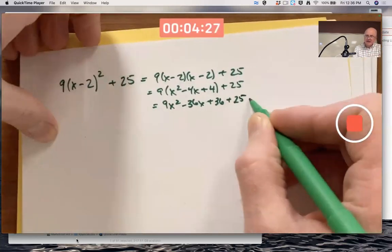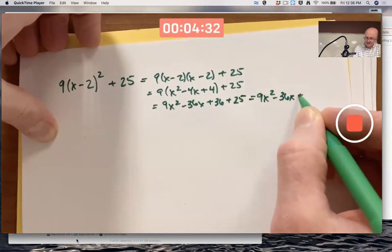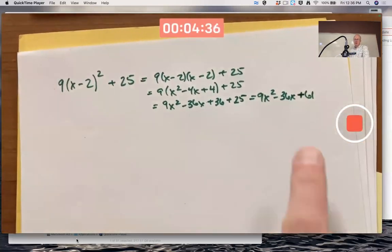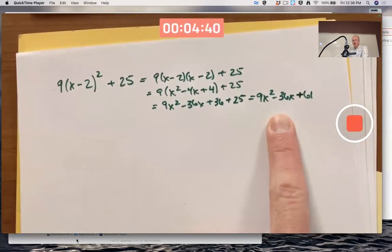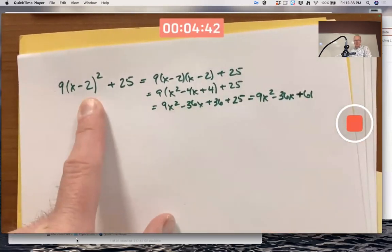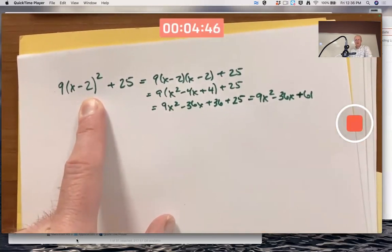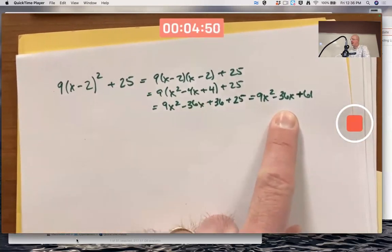Now distribute the 9 through the parentheses to get 9x² - 36x + 36 + 25. Giving me, in standard form, 9x² - 36x + 61. That's a quadratic function. In standard form, that equals this one in vertex form. This one is pretty clear it's got no real roots. But in this form, you can't tell just by looking at it.